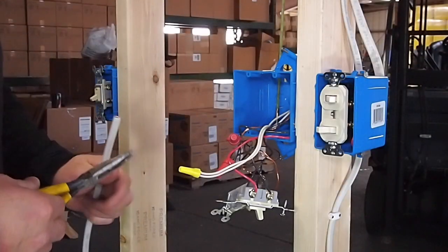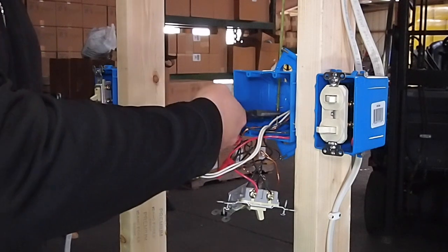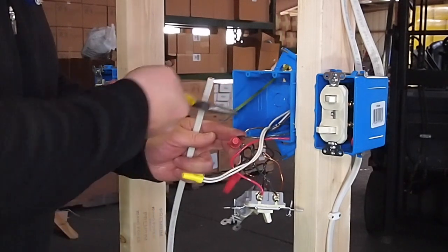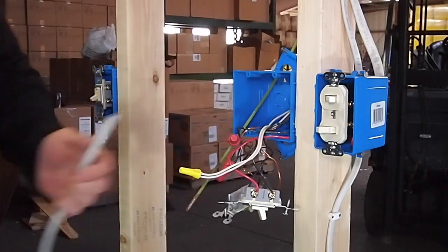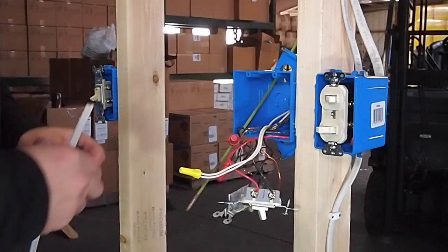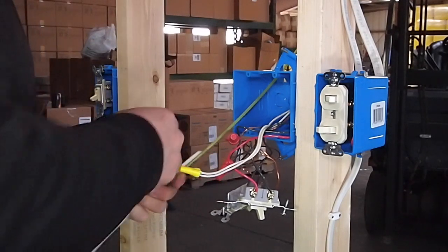We have got our fiberglass rod pushed down the box. Now I am just going to take my needle nose pliers, pull this out and tape our new wire that we are going to pull to the attic on here.